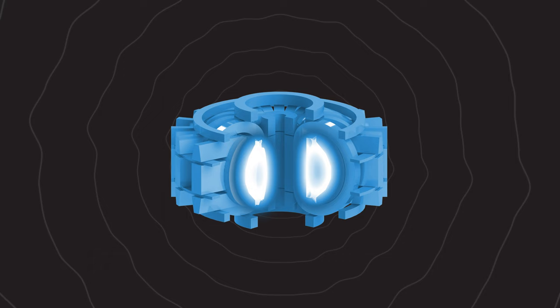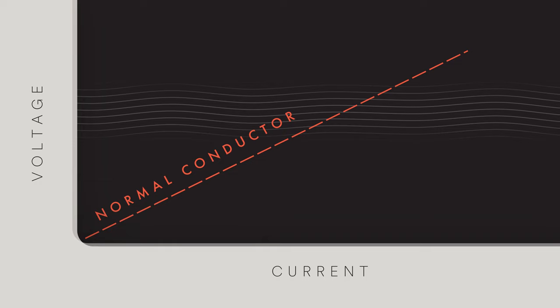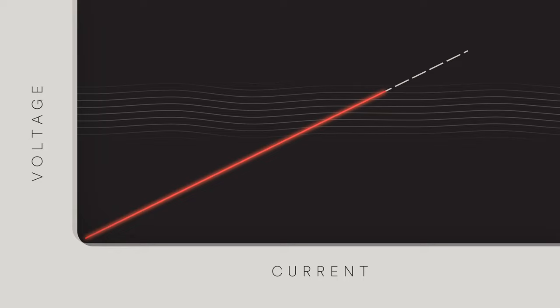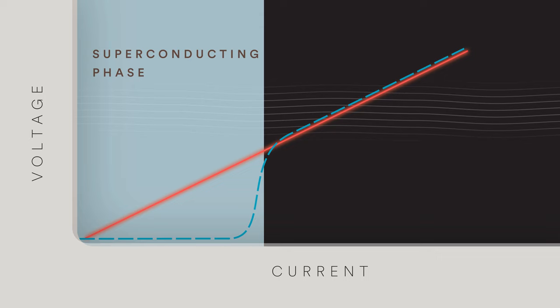A superconductor is a material that does not exhibit any electrical resistance. Check out this diagram here. The dashed red lines represent the behavior of a normal conductor, such as copper or aluminum. When a normal conductor sees an increase in current, there is a linear increase in voltage. This is due to the resistance of the conductor. Because a superconductor sees no resistance when it is in its superconducting phase, it sees zero voltage with increasing current.